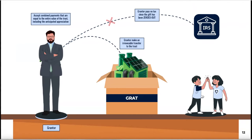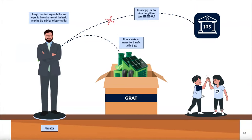This means that the beneficiaries will inherit the asset's appreciation at the end of the GRAT term. If the assets grow at a rate higher than the 75-20 rate — again, 5% in 2024 — there will be assets to pass on to the beneficiaries.